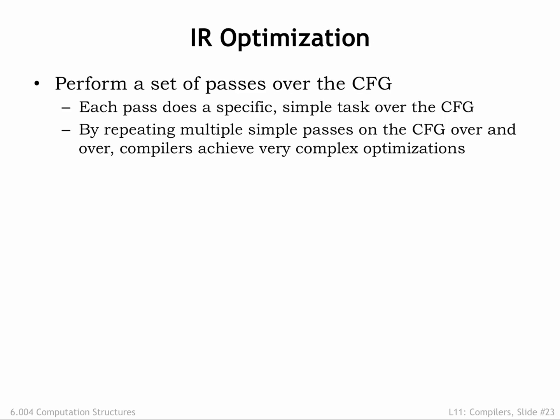We'll optimize the intermediate representation by performing multiple passes over the control flow graph. Each pass performs a specific, simple optimization. We'll repeatedly apply the simple optimizations in multiple passes until we can't find any further optimizations to perform. Collectively, the simple optimizations can combine to achieve very complex optimizations.